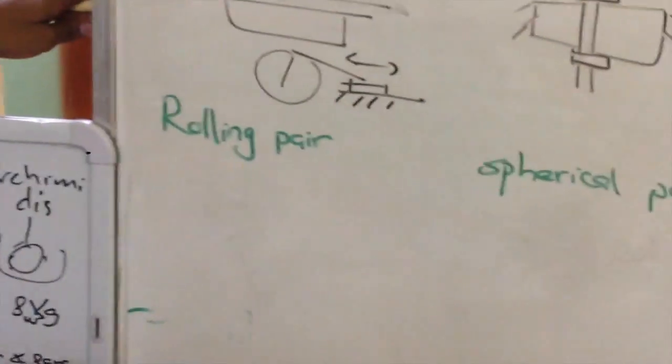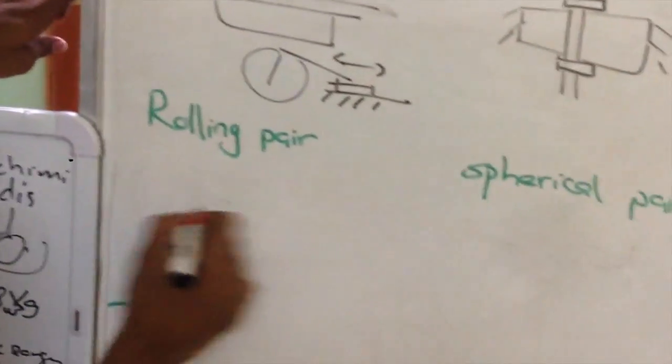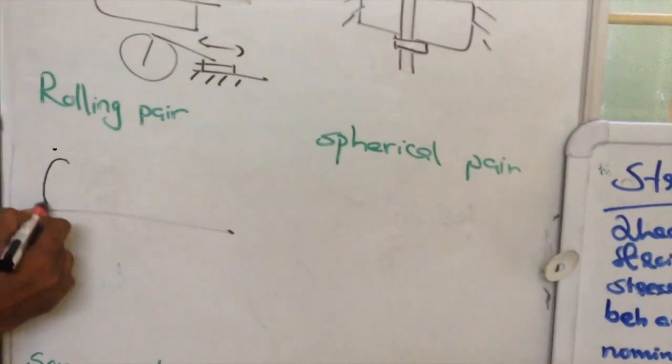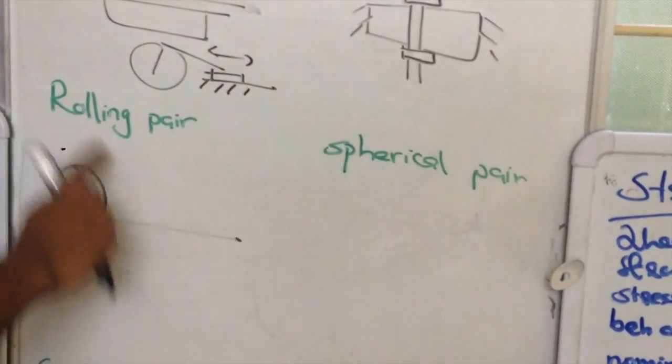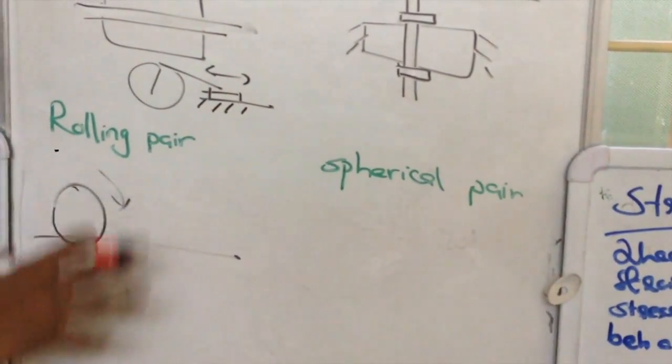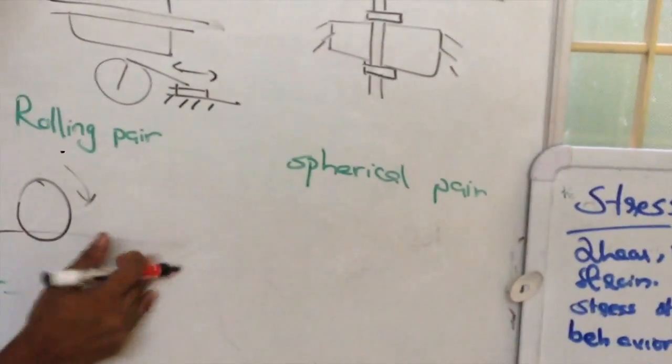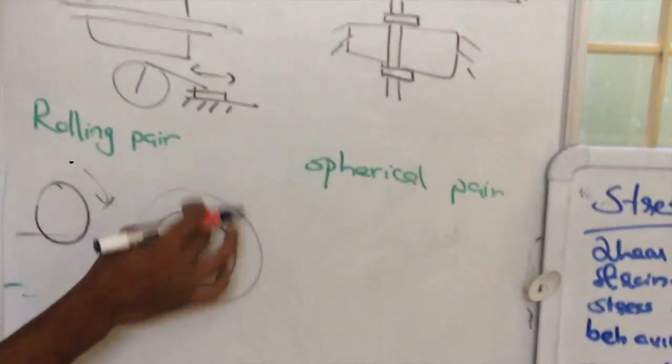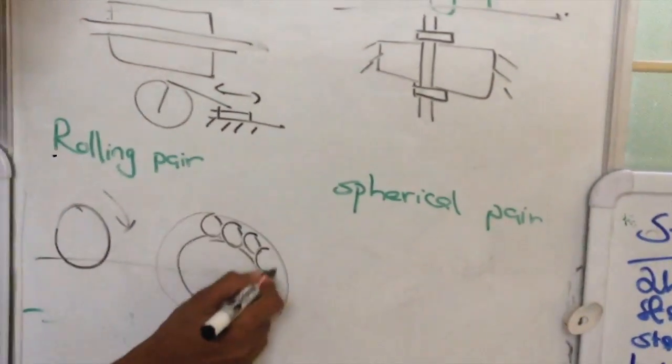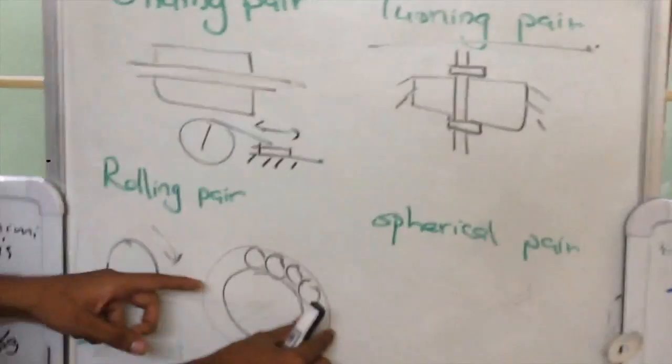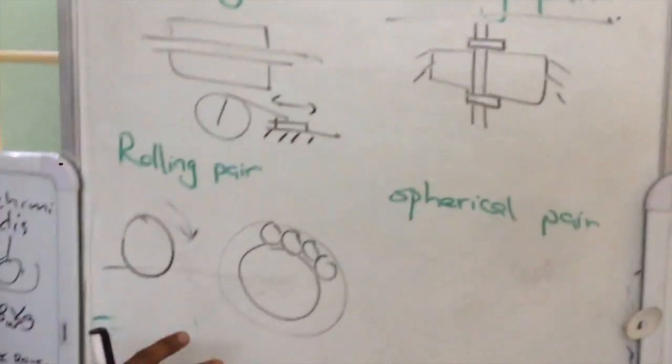Now a rolling pair. A rolling pair means one link is rolling with respect to another. Suppose this is floor and we are having some cylindrical object and this cylindrical object goes on rolling then we are calling this as a rolling pair. This can be seen inside ball bearings. In ball bearings in between two surfaces there will be so many balls. These balls can only roll inside these two surfaces. So this is called as rolling pair.